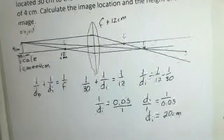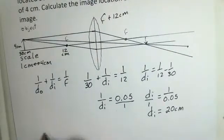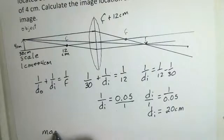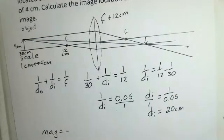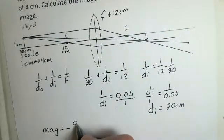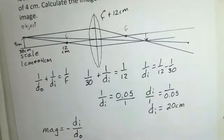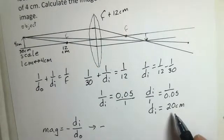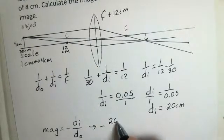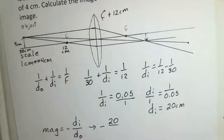What about the magnification? The magnification is always negative of the image distance divided by the object distance. We have those numbers now. A minus sign, the image distance is 20, the object distance is 30.